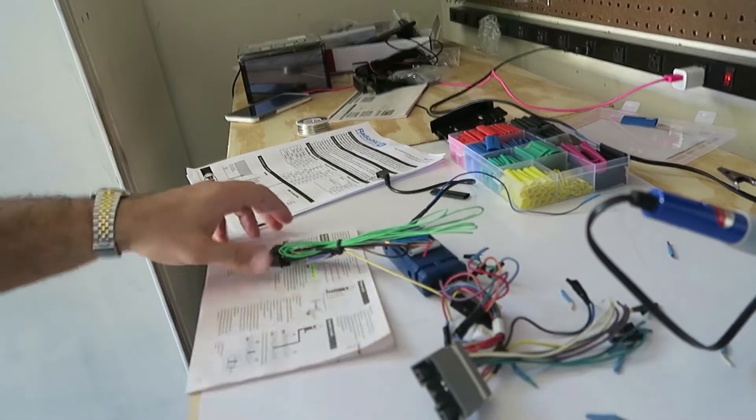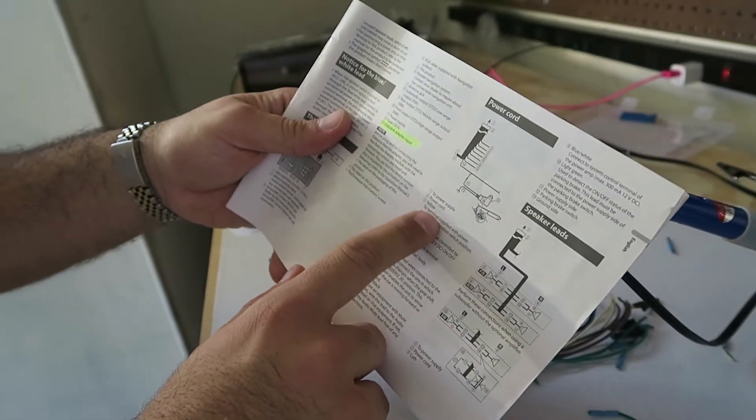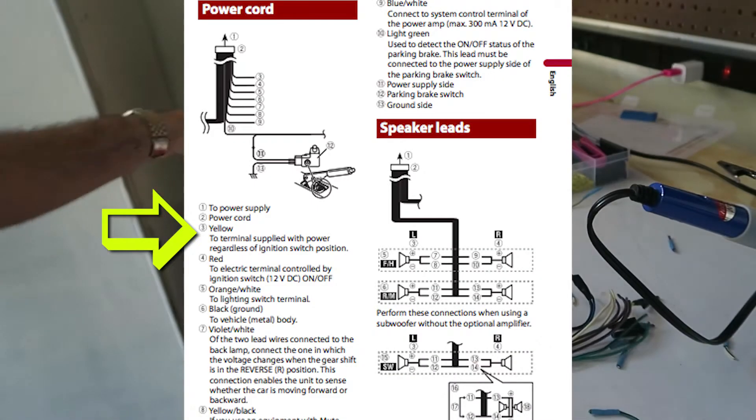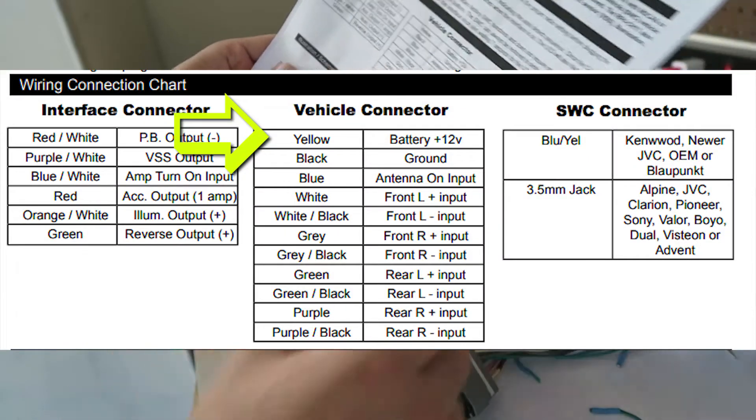So I'll give you a quick example. In here it says for the power cord it's yellow to the terminal supplied with power guard with the ignition switch. And you see on the radio pro the same thing, yellow battery plus 12 volts, that's the power.